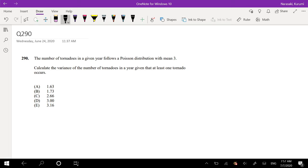Assuming you already tried it once, let's just dive right in. The number of tornadoes in a given year follows the Poisson distribution with mean 3. Calculate the variance of the number of tornadoes in a year, given that at least one tornado occurs. So that is the probability of X, where X is the number of tornadoes, given that there is at least one tornado.